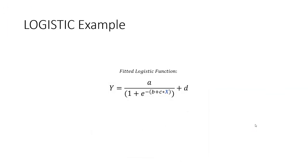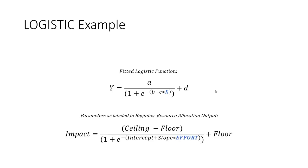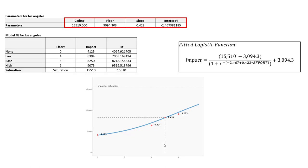The logistic function is another option. It also has four parameters to estimate: A, B, C, and D. In InGenius, A is the ceiling minus floor, D is the floor, B is the intercept, and C is the slope. Plugging in the parameters estimated for Los Angeles into the logistic function creates a fitted blue curve. Again, the curve doesn't perfectly fit the data, but it's close.